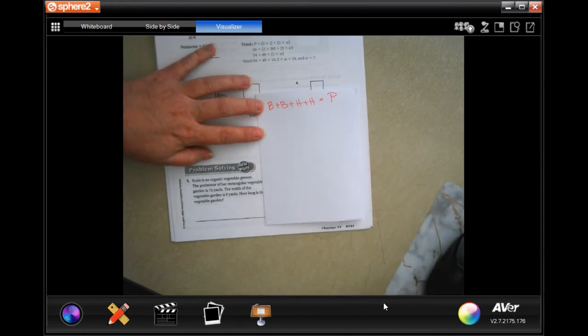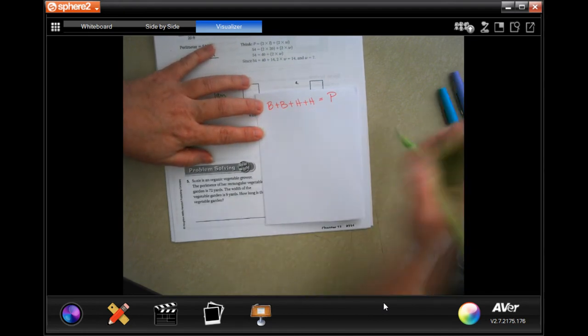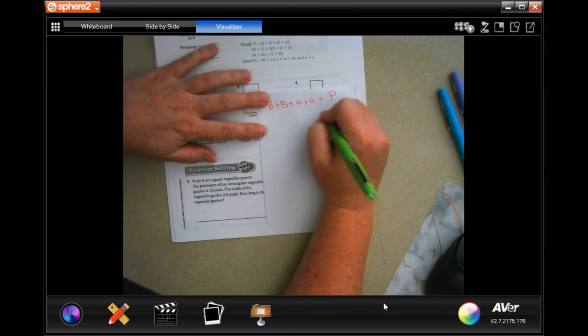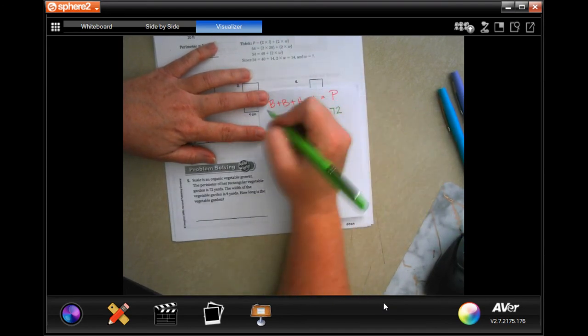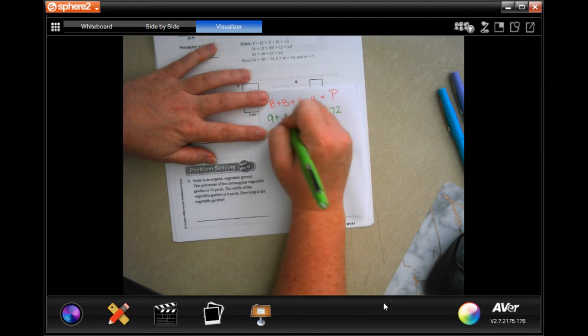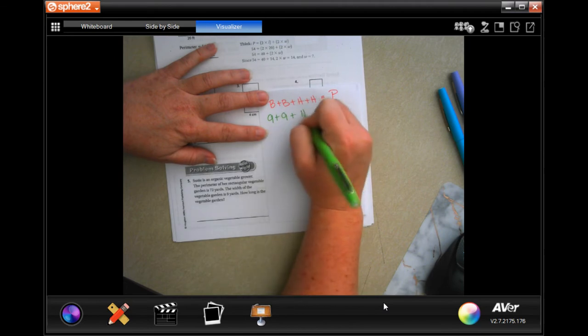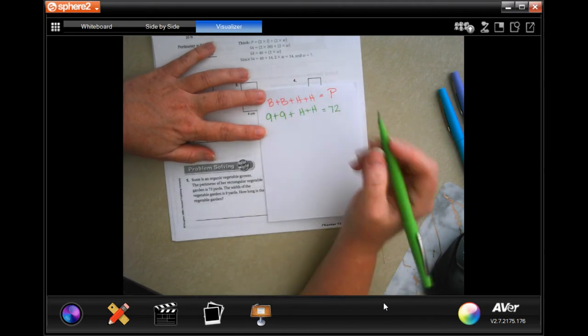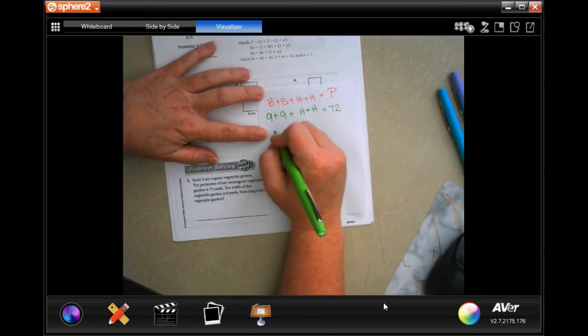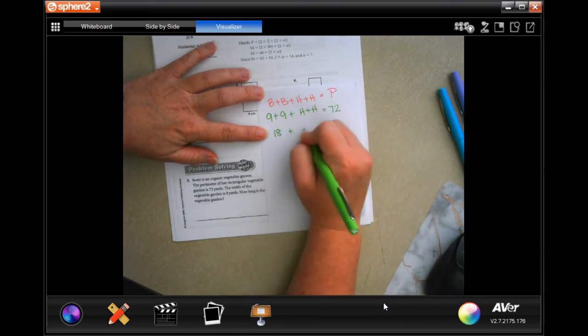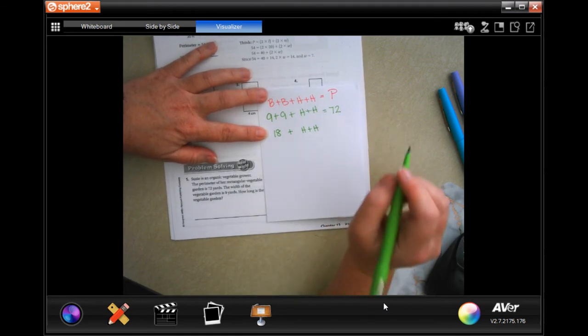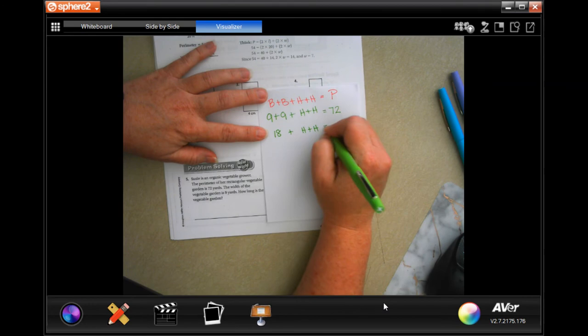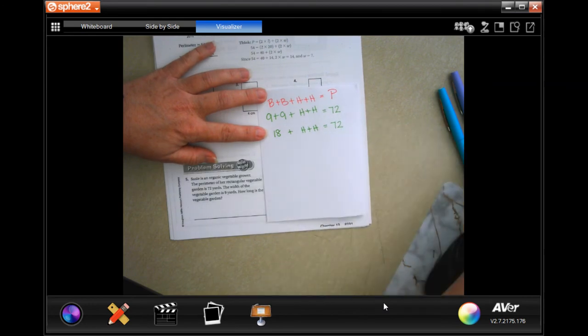But I'm going to do this, and then I'm just going to fill in the blanks. So the perimeter, it's telling us, is 72. It's also telling us that the width, so the base, is nine. So we have nine plus nine plus H plus H. We're going to have 18 plus H plus H, and that's equal to 72.